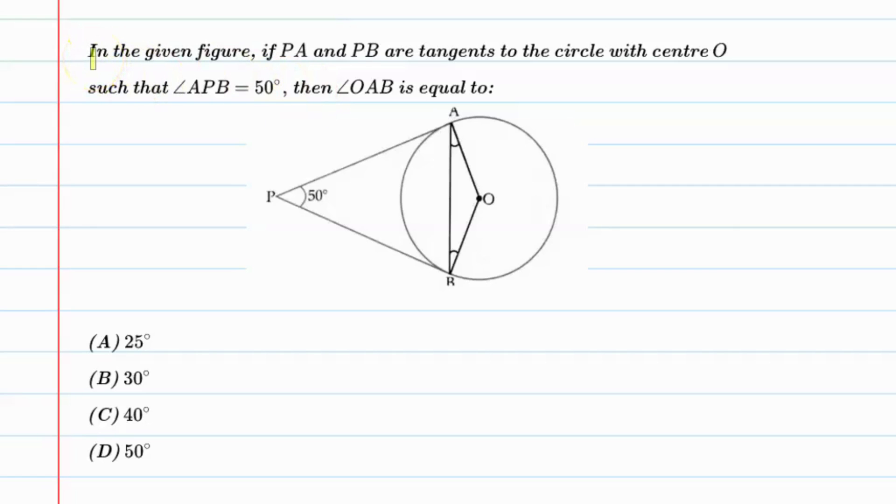Hello students, let's solve this question. In the given figure, if PA and PB are tangents to the circle with center O, such that angle APB is equal to 50 degrees, then angle OAB is equal to...